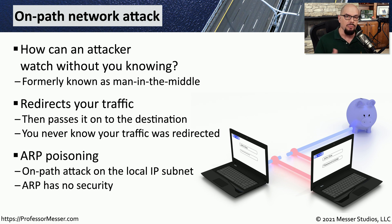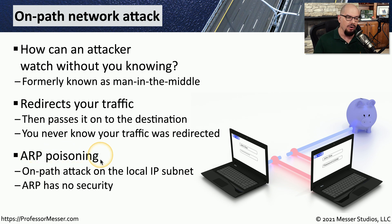On a local subnet, one simple way to have an on-path attack is through the use of ARP poisoning. ARP is the address resolution protocol. And because there's no security built into ARP, we're able to manipulate where certain devices can send traffic.